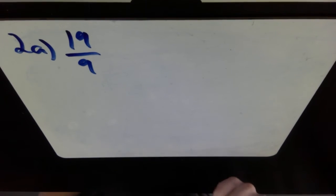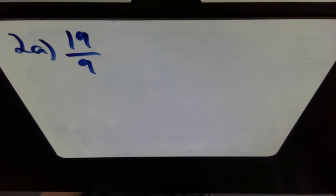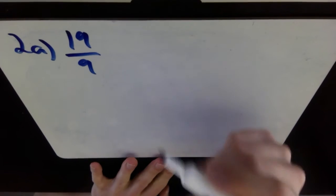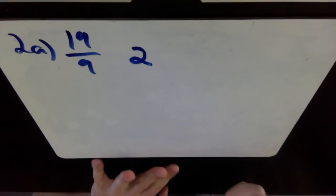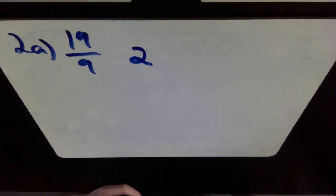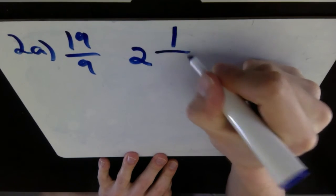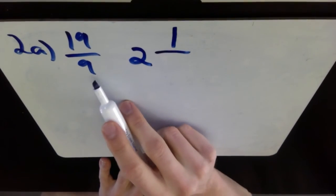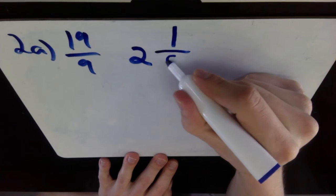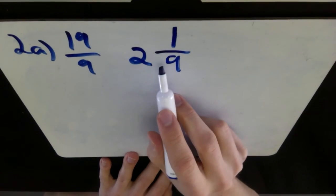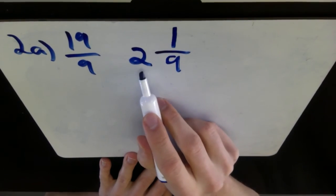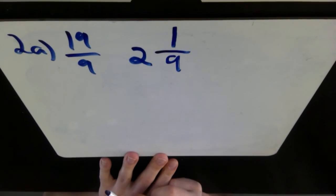Well, 9 goes into 19 two times without going over. Think of it this way. Think of it as counting by 9s: 9, 18. So it goes in twice without going over. What's left over between 18 and 19 is 1. So what's left over is your numerator 1. Your denominator stays the same as 9. So your new fraction, an improper fraction to a mixed number, is 2 and 1 over 9. There's 2A.